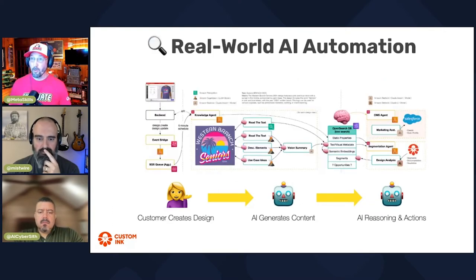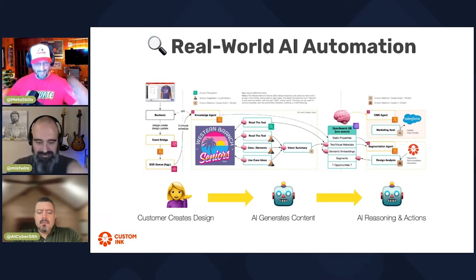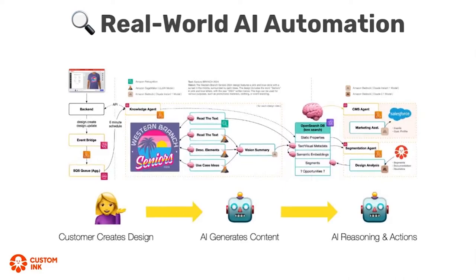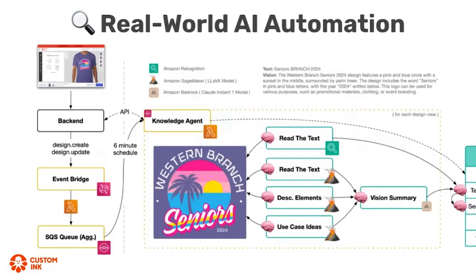Let me zoom in on what this looks like. At a high level, from the balloon perspective: as customers save designs in our lab, we have AI generating content based on those designs. Then we use AI reasoning and actions in additional pipelines off of that knowledge pipeline to do cool business stuff. There's an event-driven system on the left-hand side, a knowledge agent in the middle, and vertical AI solutions on the right-hand side.